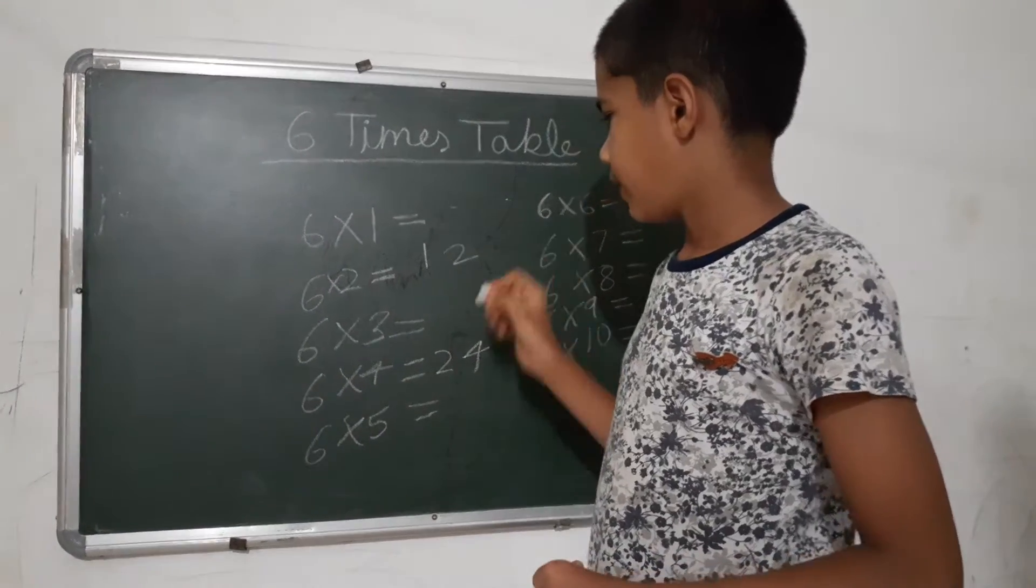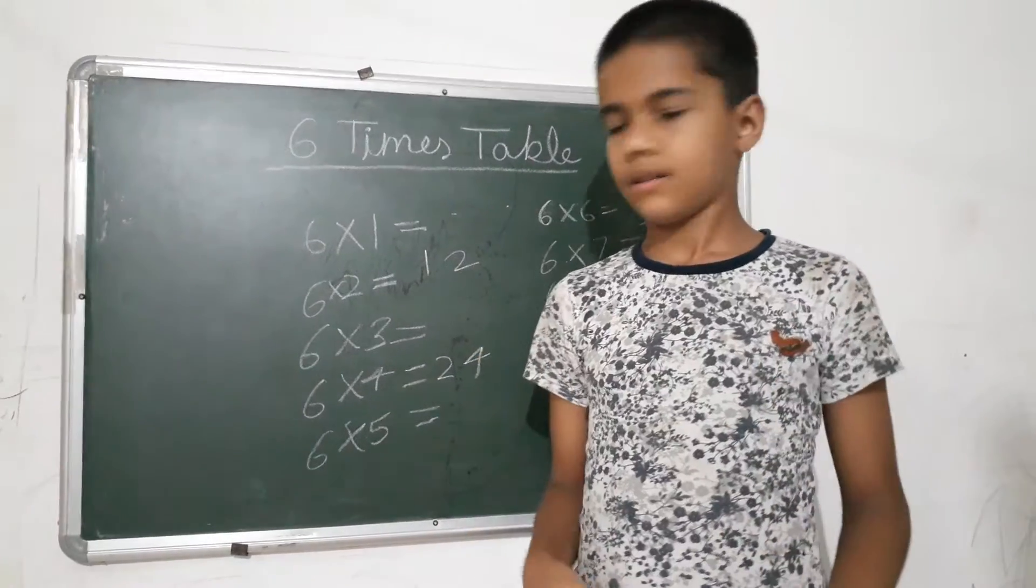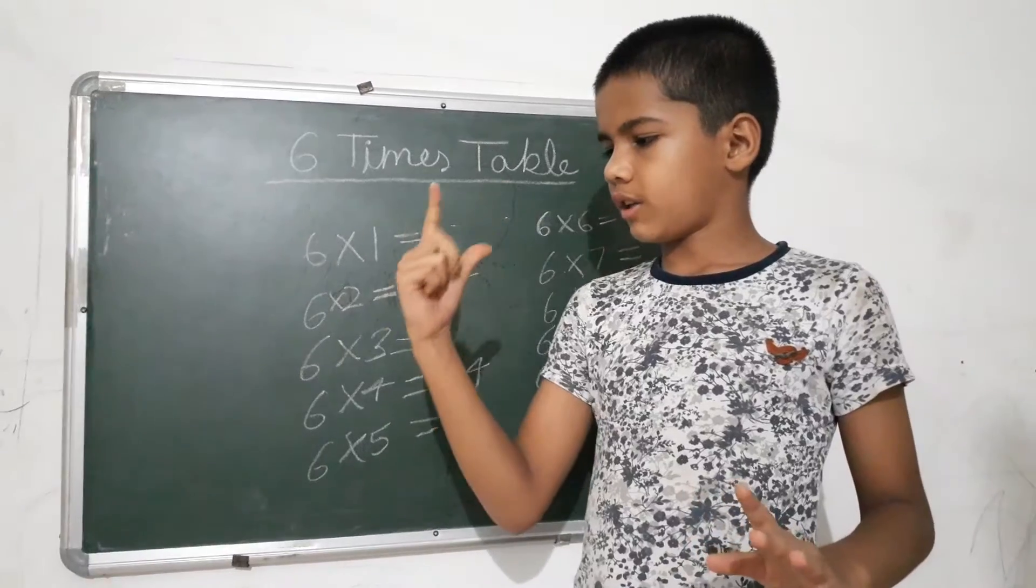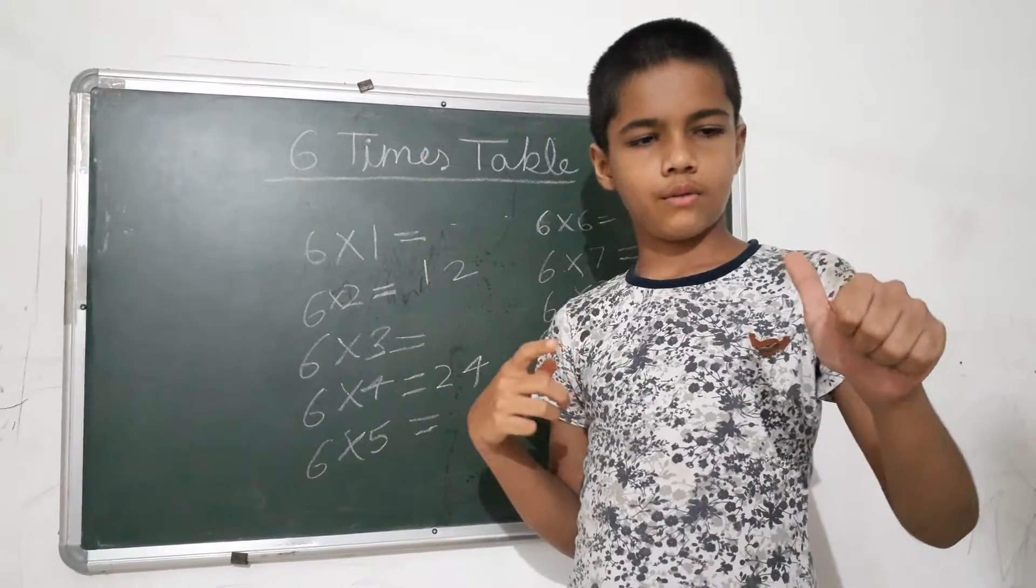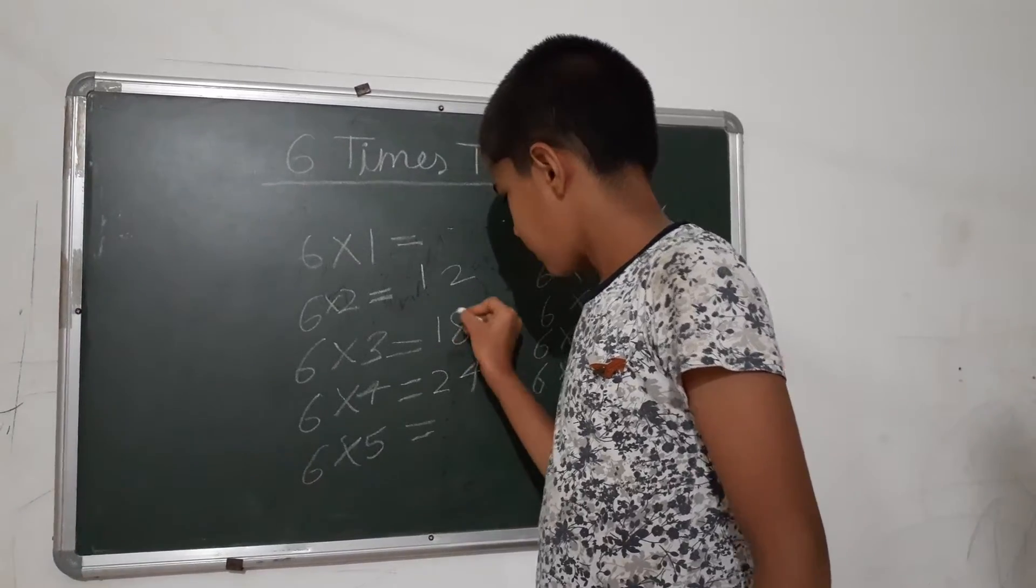Now, we will add 2 plus 6, 12 plus 6, 13, 14, 15, 16, 17, 18. Our answer is 18.